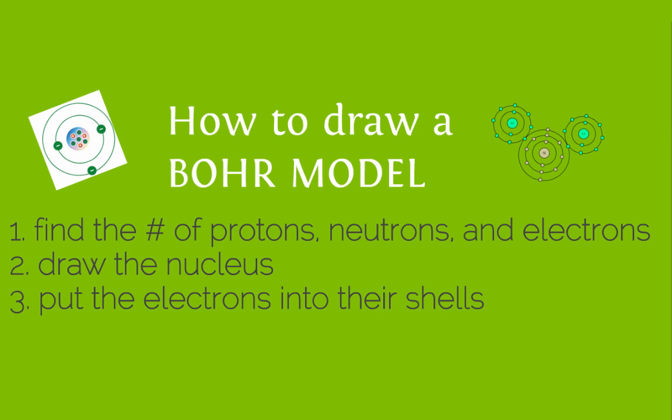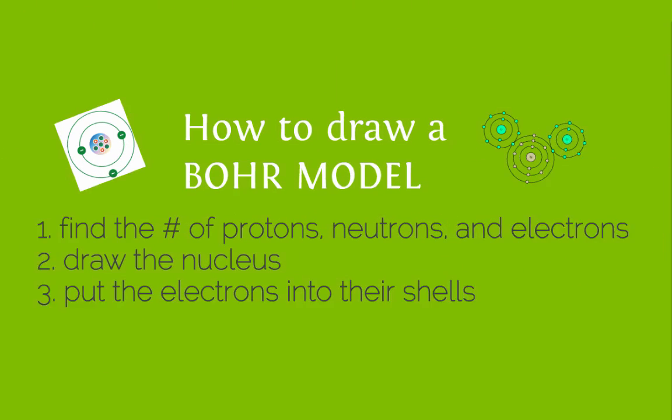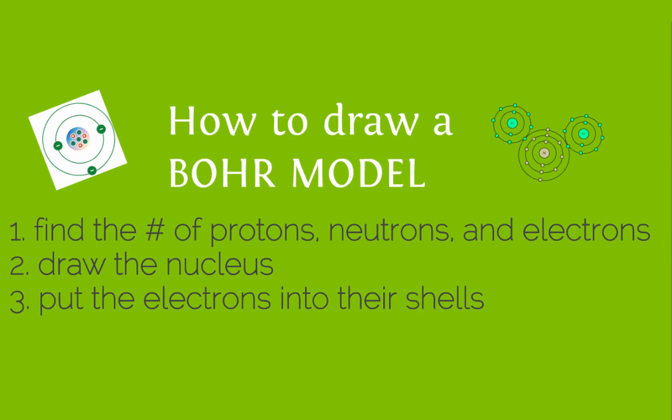Now there's a trick about the shells. The shells can only fit certain amounts of electrons. So the first shell can fit two, second shell can fit eight, and the third shell can fit eight. So just keep this in the back of your mind, and we're going to use this to draw some Bohr models.